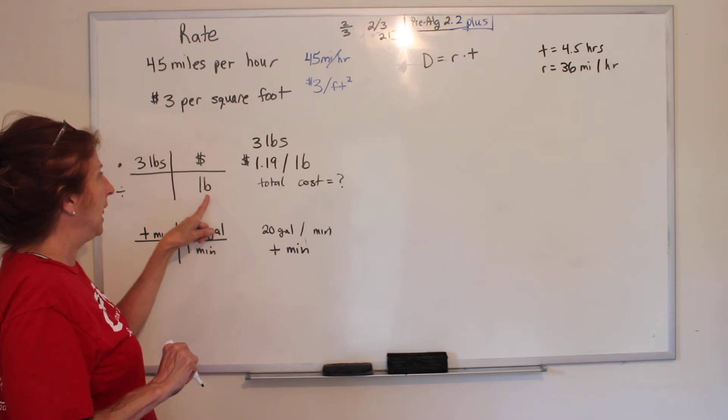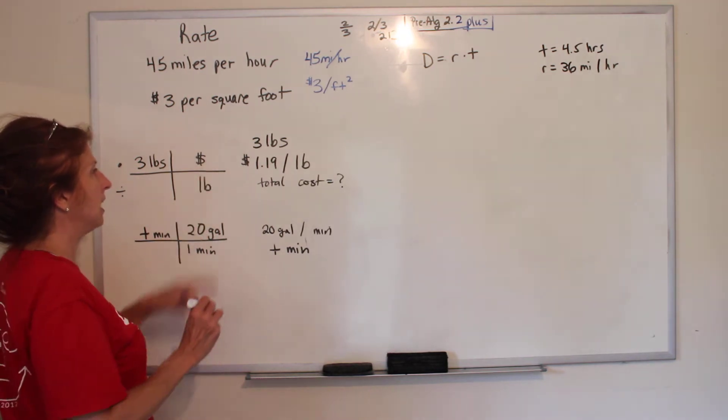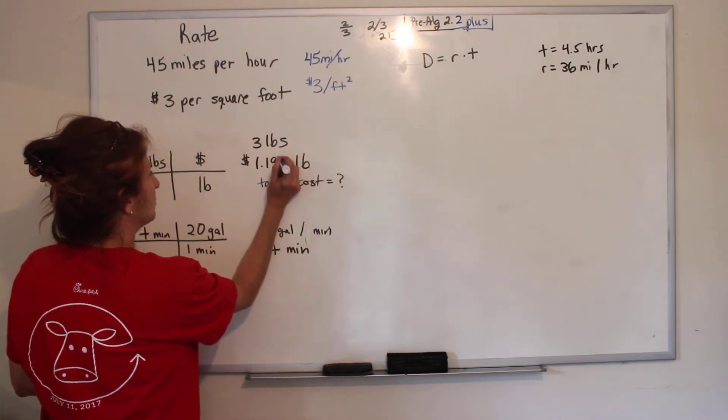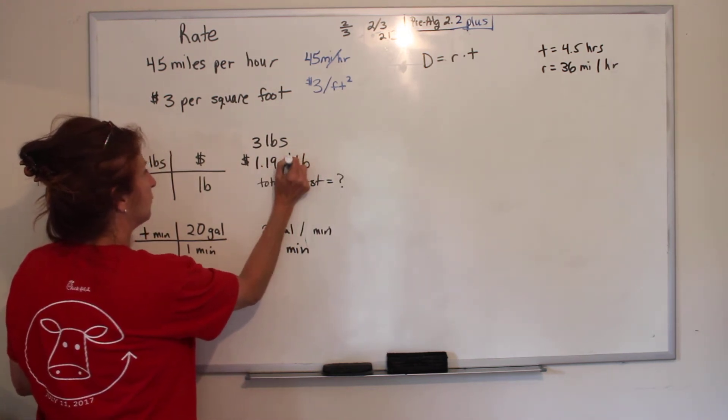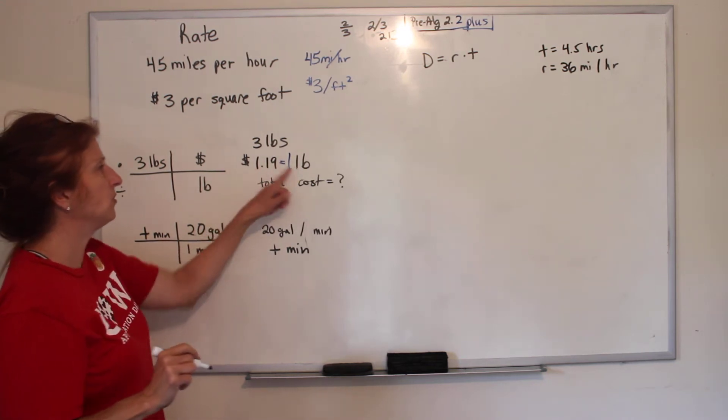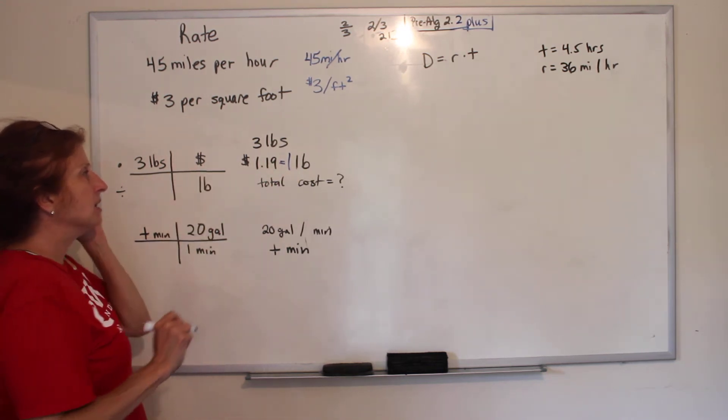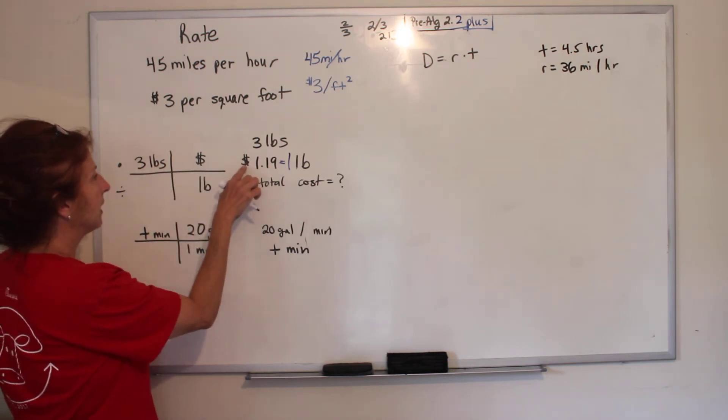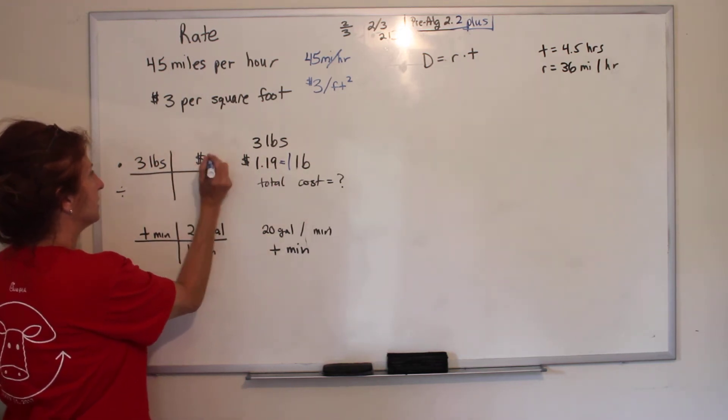And the unit that's going to get changed to on the top. This is our conversion factor. It's $1.19 for one pound. Those two things are equal. So we write the number that goes with the unit. What goes with money is $1.19, and what goes with pounds is one.